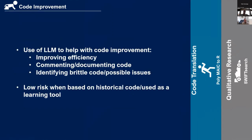For code improvement, the general idea is: can we use large language models to help improve the efficiency of our code? Can we make our code faster? Can we help with commenting and documenting code? Can we use it to help identify potentially brittle code or possible issues that we're not seeing? I've classified this as low risk because generally you're going back to historical code, using it as a learning tool — asking what's an application of the same thing if I were to write it in data.table, or how could I translate this dplyr to base R.